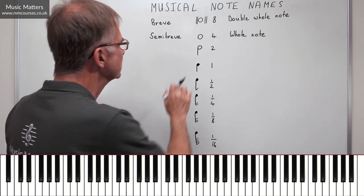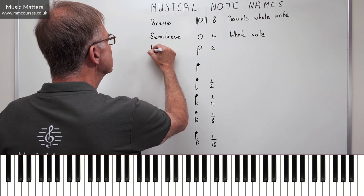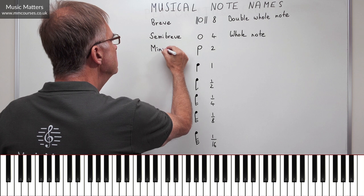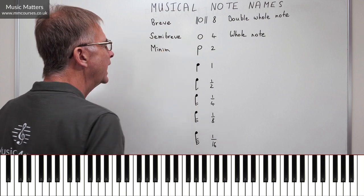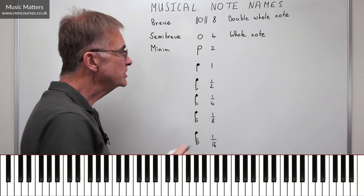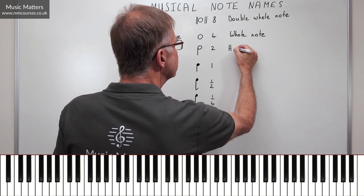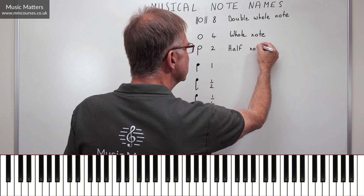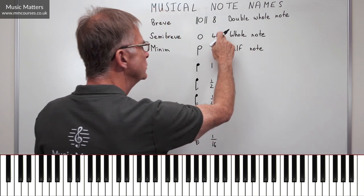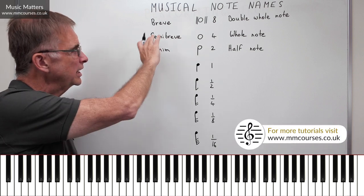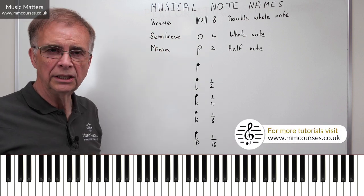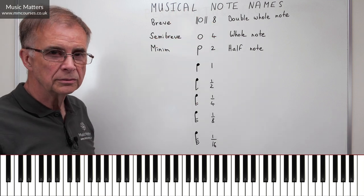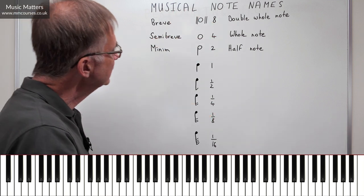Now if we move on to this one, in the UK system, the note that has two beats is called a minim. And in the US system, it's called a half note. Now that kind of makes sense, doesn't it, really? If this one is a whole note, well, that's a half note. I have to say, in the UK, we've got these rather quaint names. In many ways, the US system is much more logical. But anyway, good to know them both.